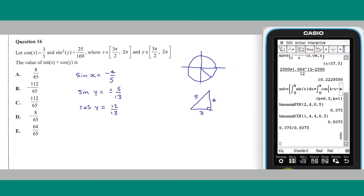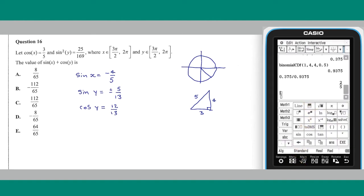The sum of sine x plus cosine y is equal to the sum of these fractions. This corresponds to answer A.